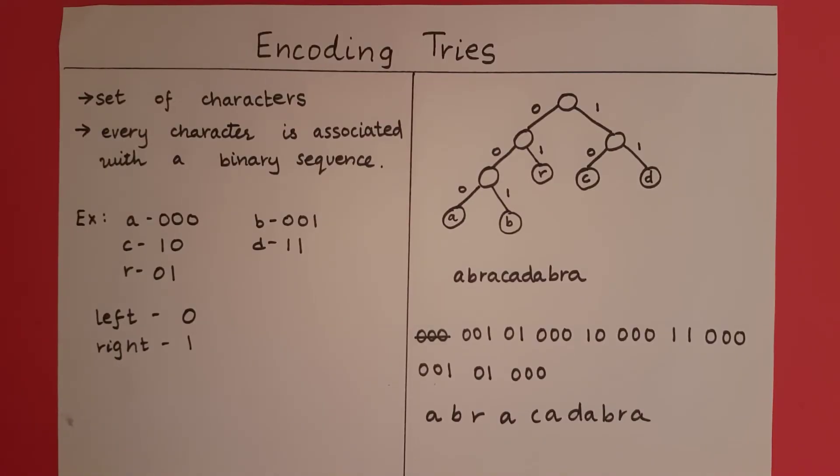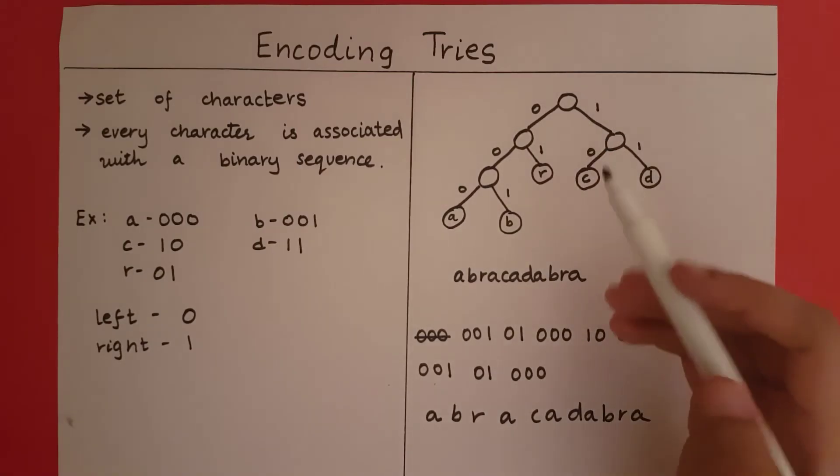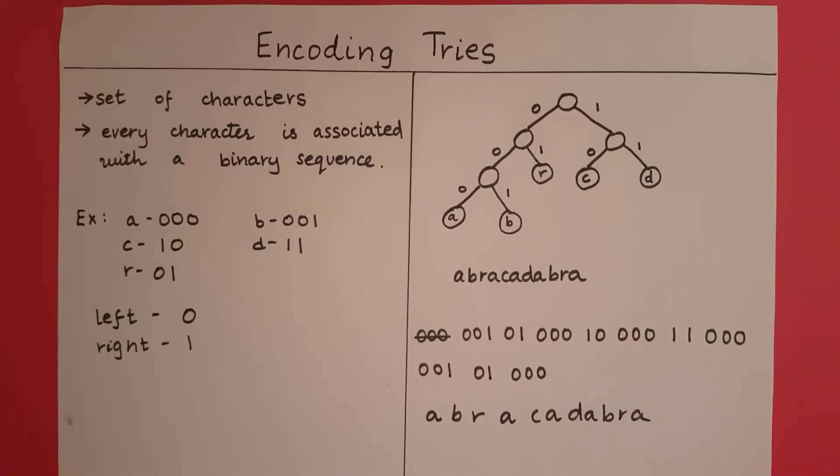Now at this point, it is important to note that this method only works because all the characters are present at the leaf node. What does that mean? It means that no two characters have binary sequences that share a common prefix. If you see in this set of characters, no two of these binary sequences share a common prefix. So when we are scanning the code, we keep traversing the tree according to the 1s and 0s. Whenever we reach a leaf node, we are going to write the character.